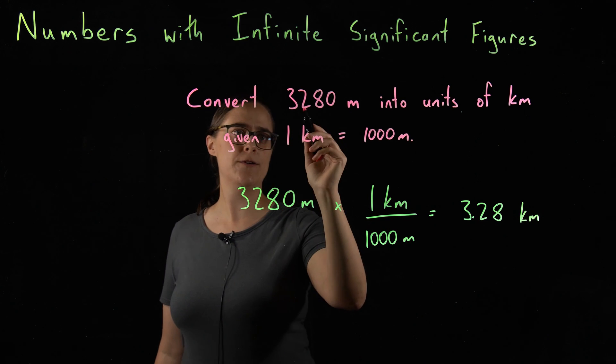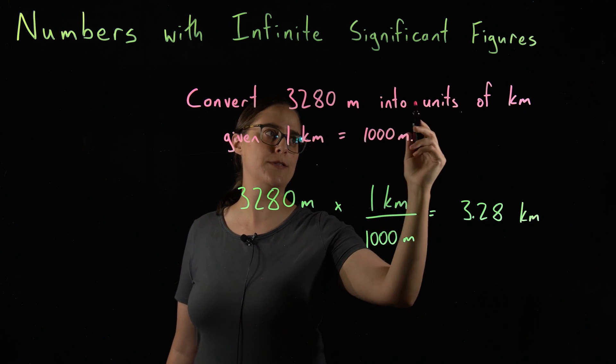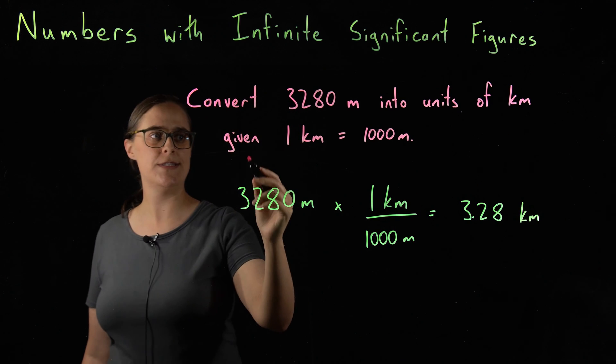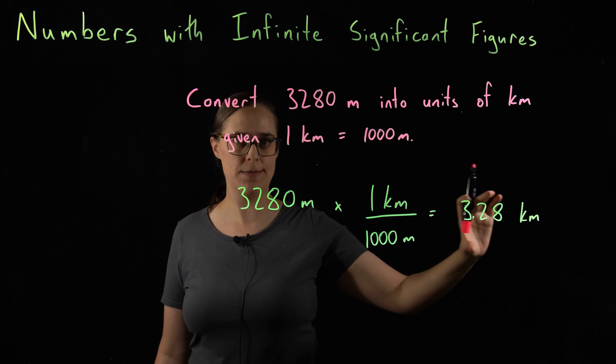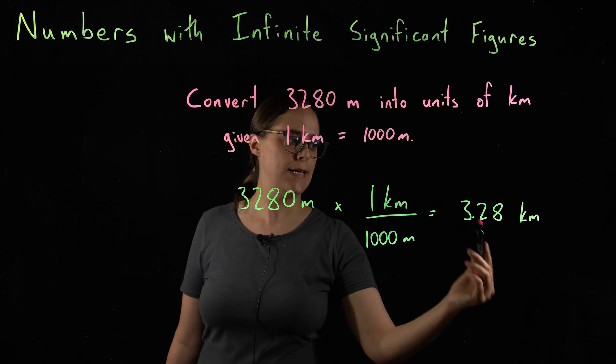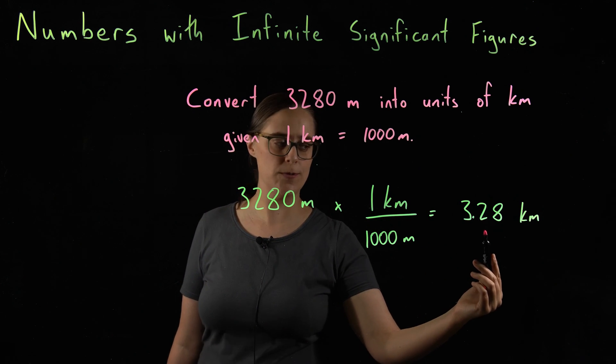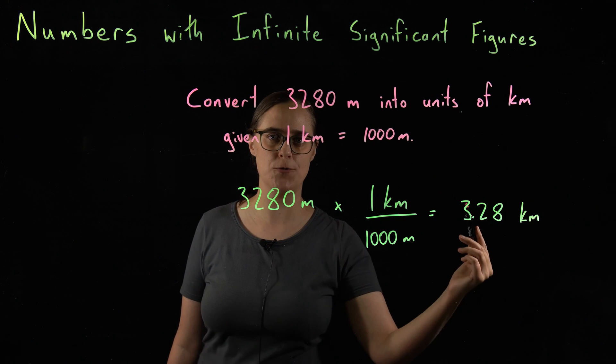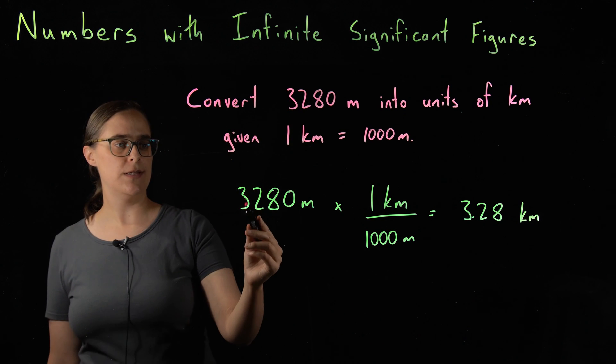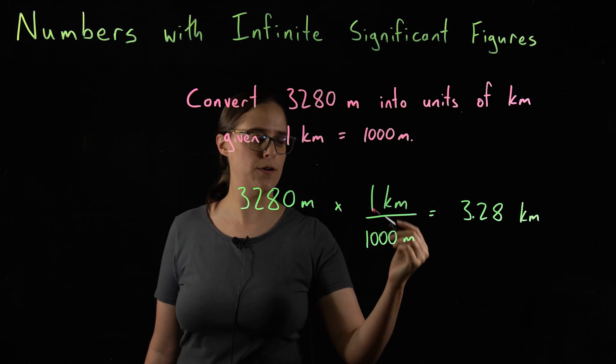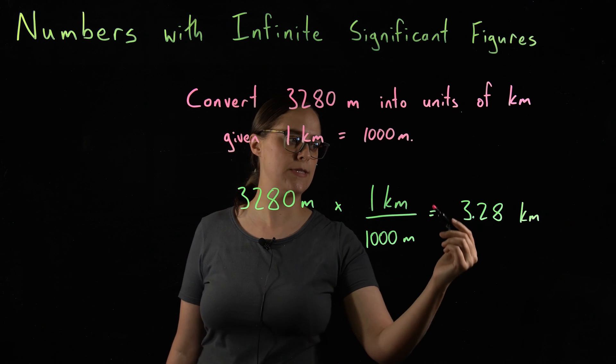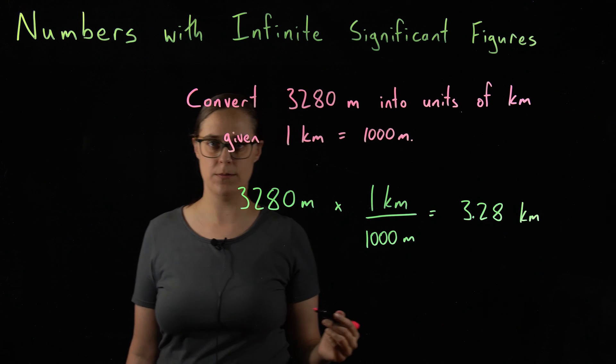This problem is convert 3280 meters into units of kilometers given 1 kilometer equals 1,000 meters. I have the mathematical calculation written out here, and I have the answer that a calculator would give. We need to figure out how to round this answer.